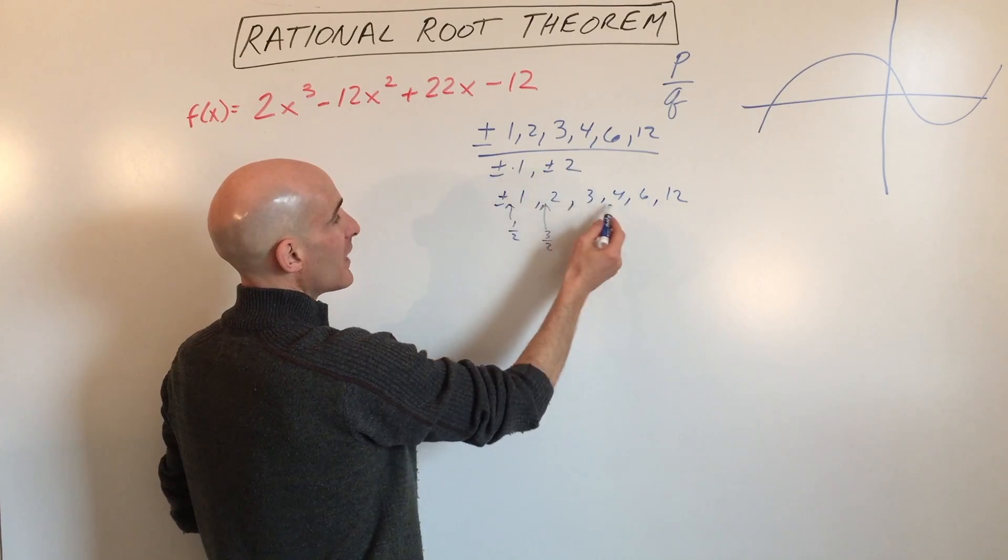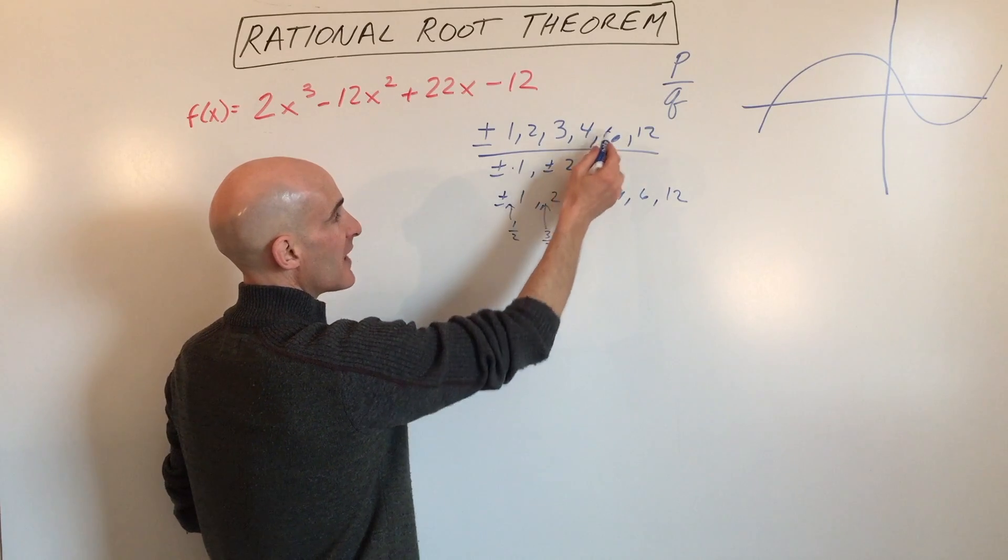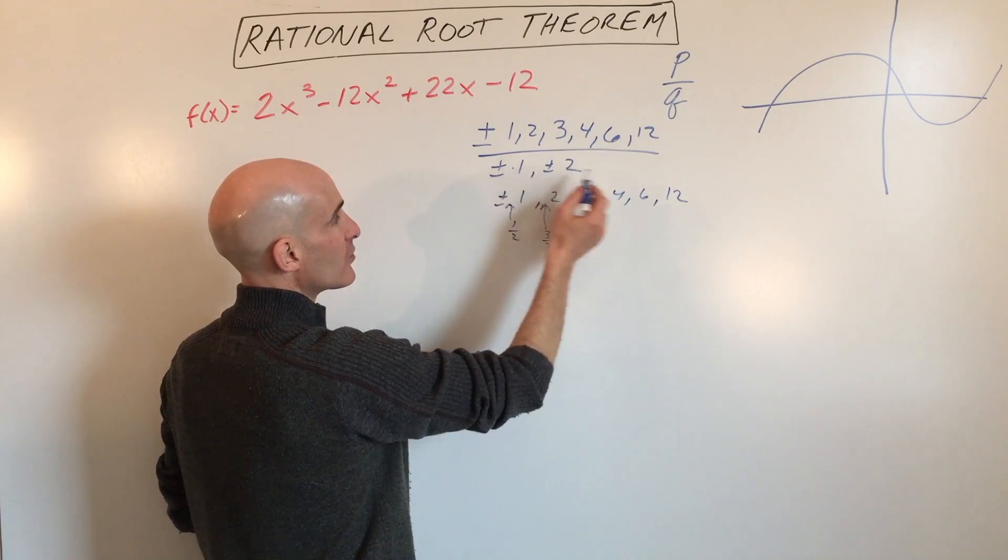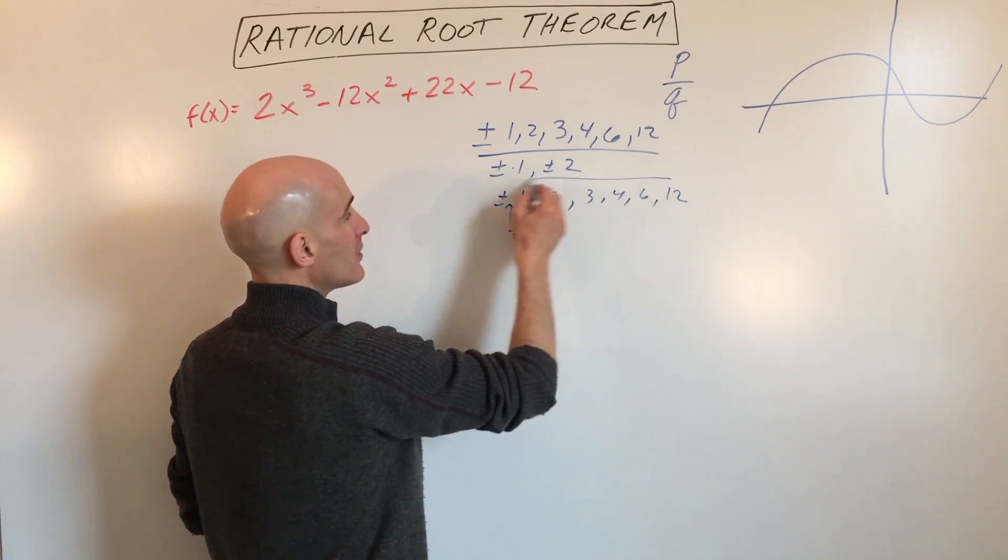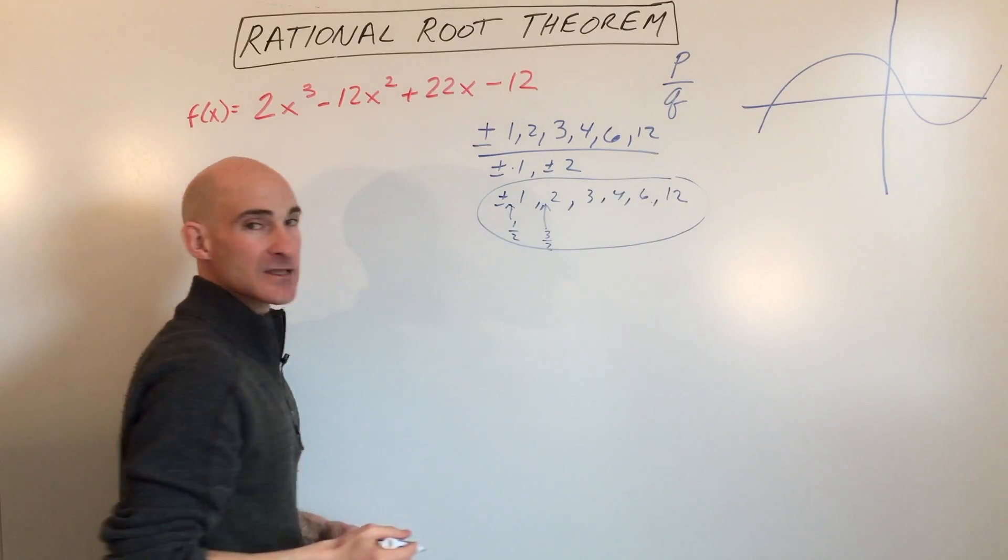4 over 1 we have that, 4 over 2 is 2 we have that, 6 over 2 is 3, 6 over 1 we have that, 12 over 2 which is 6 we have that. So these are all the possible rational roots.